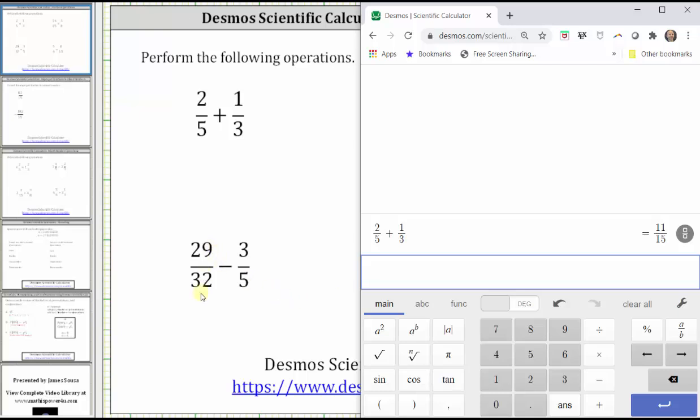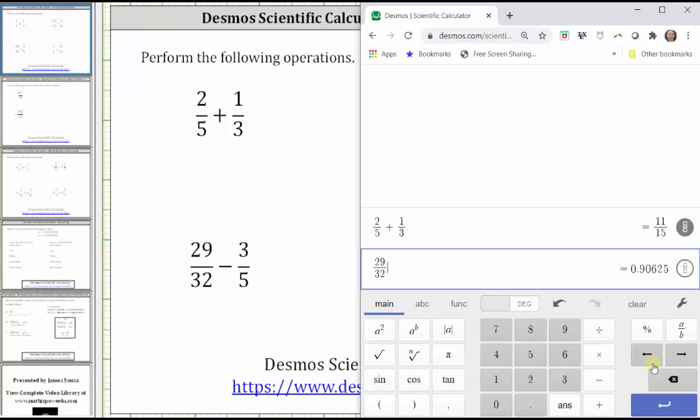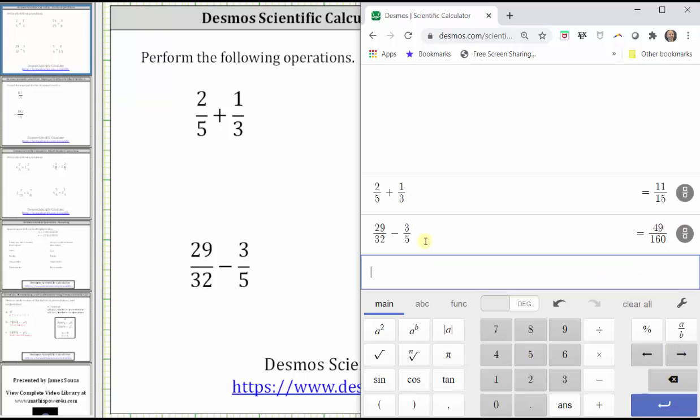Next, we have 29/32 minus 3/5. We enter 29 divided by 32, right arrow, minus three divided by five. Click convert to fraction, click enter. The difference is 49/160.